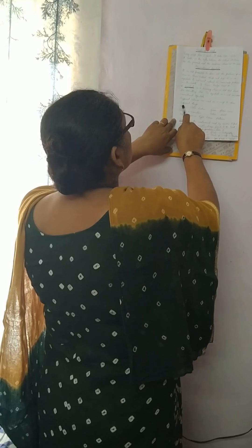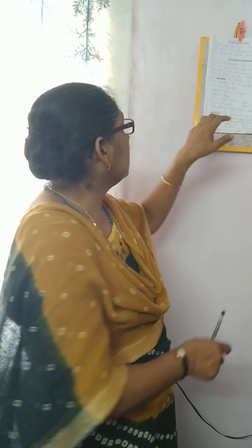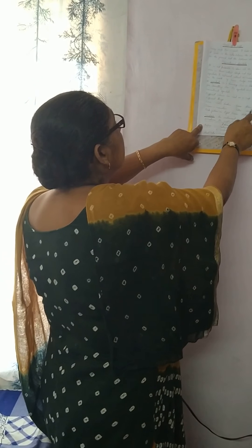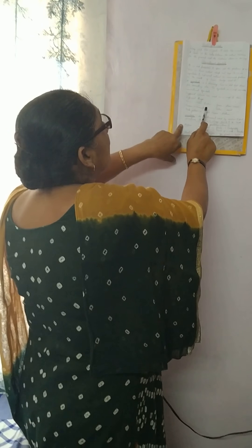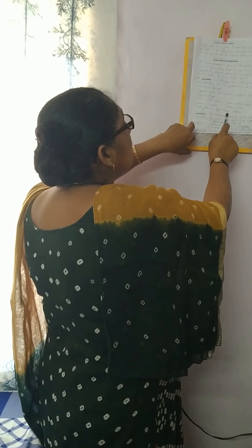Different colors are used on a map to show different things. Blue color shows water bodies, green color shows plain areas, brown color shows mountains, yellow color shows deserts, and dark yellow or light brown shows plateaus. When we work with maps, we should bring crayons to mark different places with different colors.